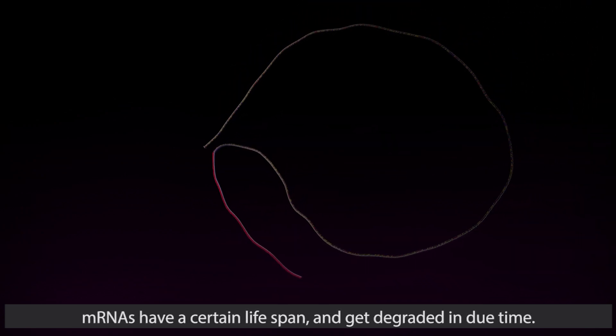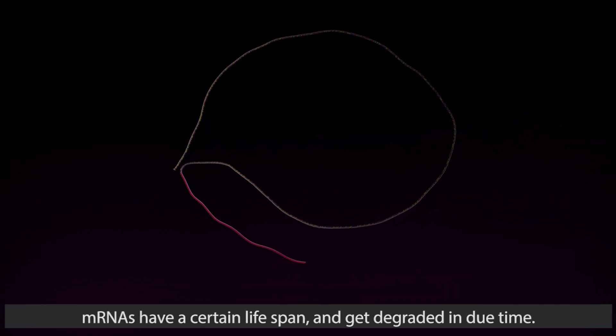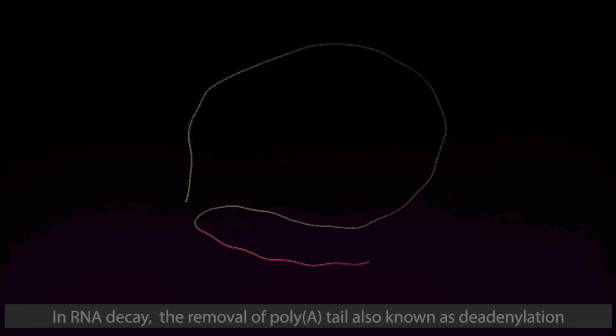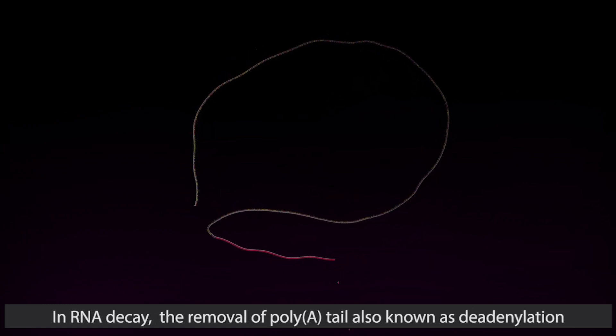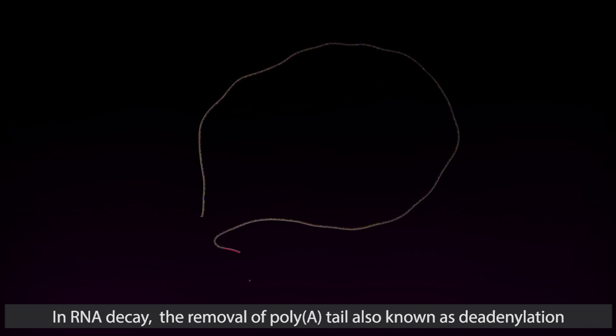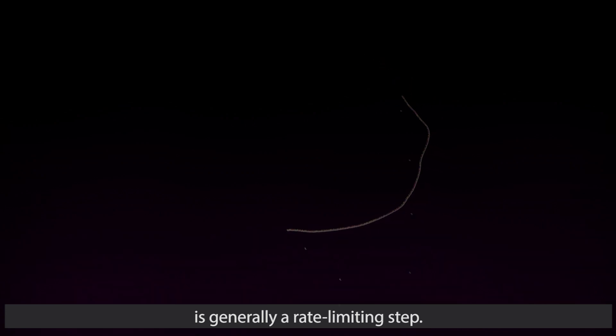mRNAs have a certain lifespan and get degraded in due time. In RNA decay, the removal of poly(A) tail, also known as deadenylation, is generally a rate limiting step.